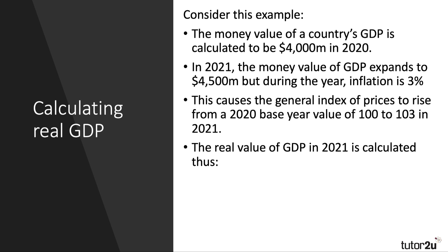In 2021, the value of GDP goes up to four thousand five hundred million dollars — quite a significant increase. But over the year there's also been some inflation; we'll assume three percent, causing the general price index to rise from 100 in the base year 2020 to 103.